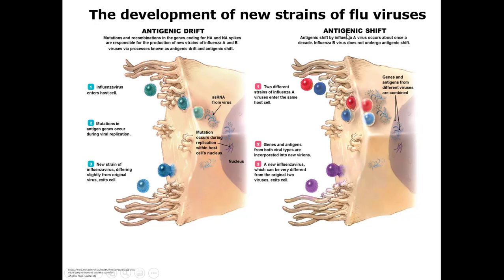Antigenic drift is illustrated as a slight color change — teal goes in, blue comes out. The more people that get the flu, the more opportunity for change to occur, creating new strains. Antigenic shift takes two different strains — shown as red and blue — that both enter the same host, recombine, and produce a completely new virus, shown as purple.